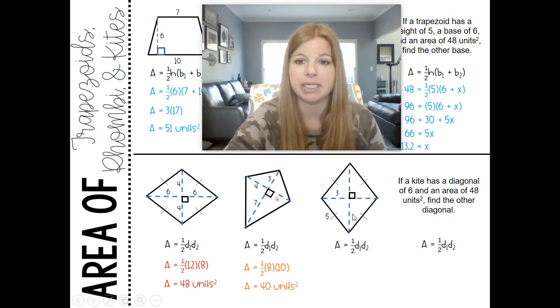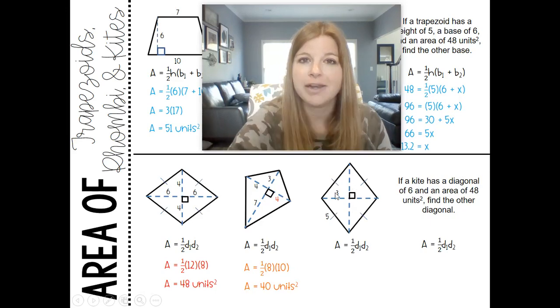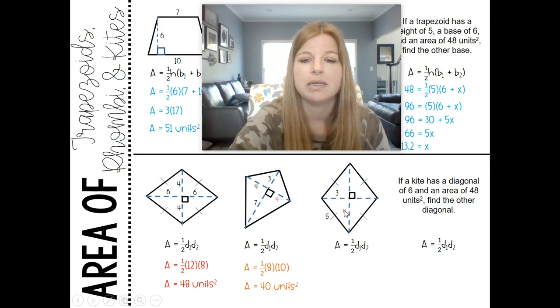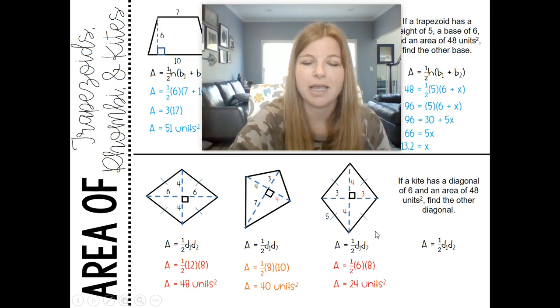Now this last one here, I know this is three. It's a rhombus, if this is three then this is three, but I need to find this length here. Now I know that in a right triangle I could have a 3-4-5 triangle, which would be perfect for this right triangle, so this would have to be four. I'm just kind of cheating instead of doing three squared plus x squared equals five squared and solving. If this is four, then this is four. So my diagonal here is six, my diagonal here is eight, and I get 24 units squared.